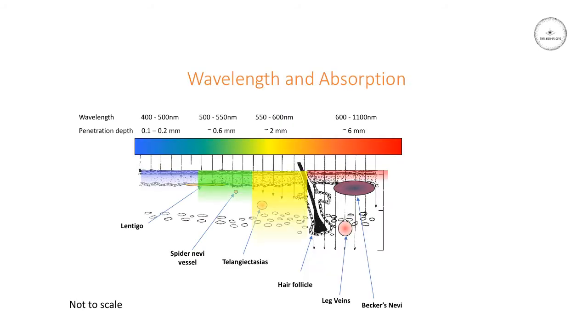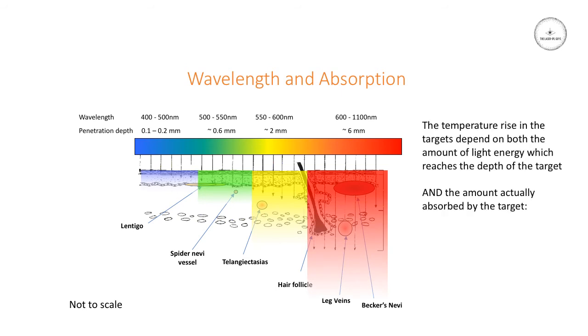In summary, we should choose the wavelength according to the depth of the target. Red is good for deep targets, whereas blue, yellow, and green are preferable for superficial targets. But we also must match the wavelength according to the absorption coefficient of the target. There's no point sending all that energy down there if the target isn't going to absorb very strongly.